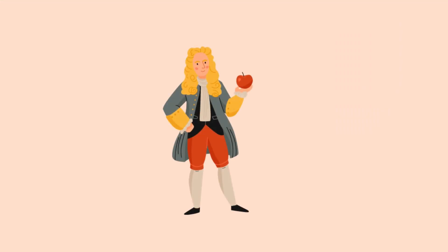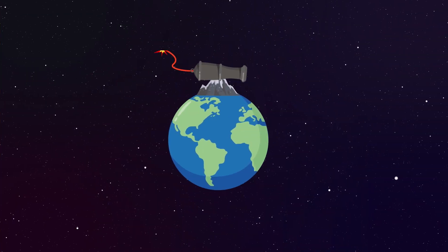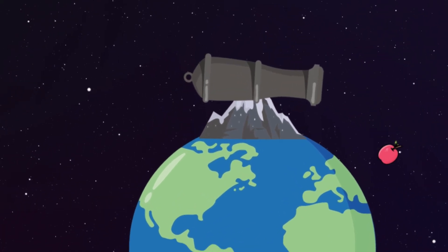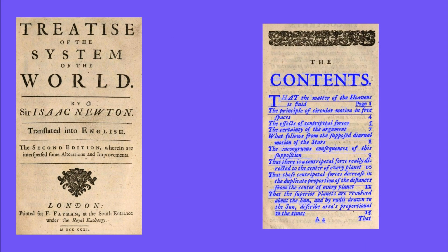It took Newton more than 20 years to figure this out, and of course he had to invent calculus along the way. But with the benefit of his genius thought experiment, we can understand it in a little less than 20 years. His thought experiment is called Newton's cannonball and was published in A Treatise of the System of the World in 1728.